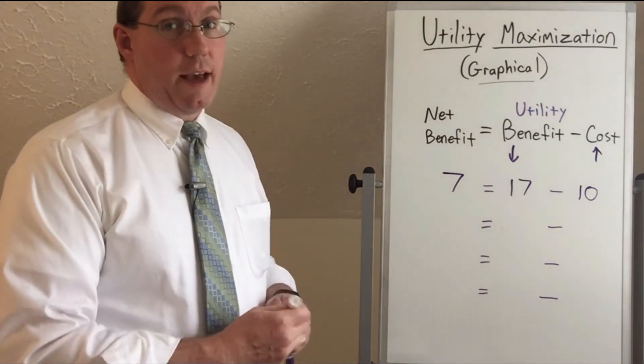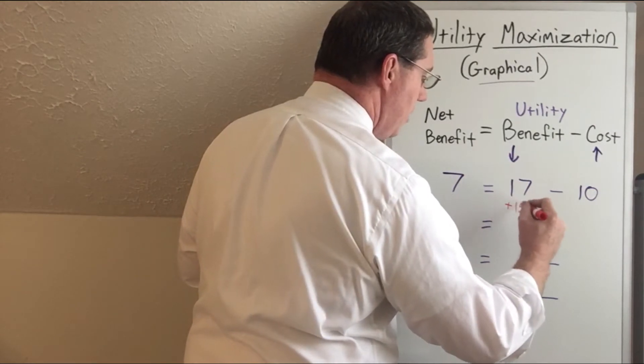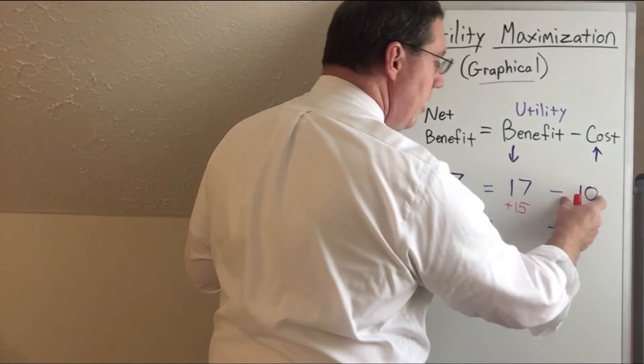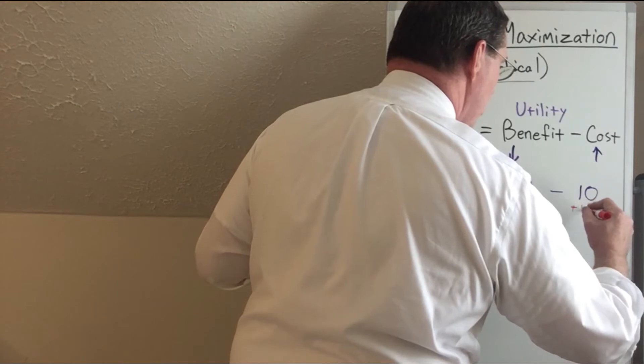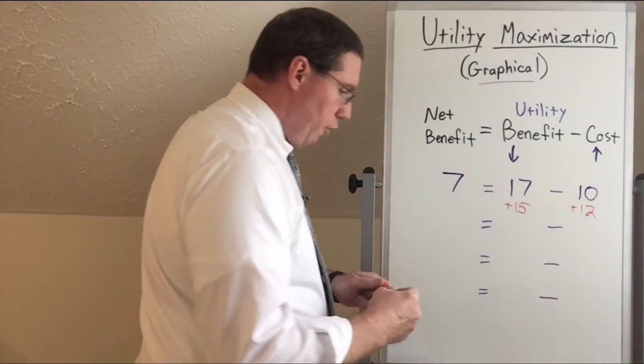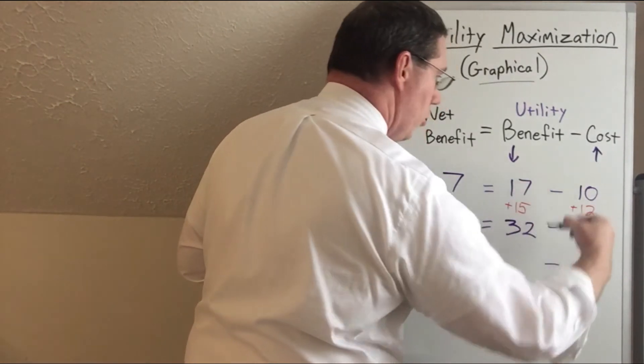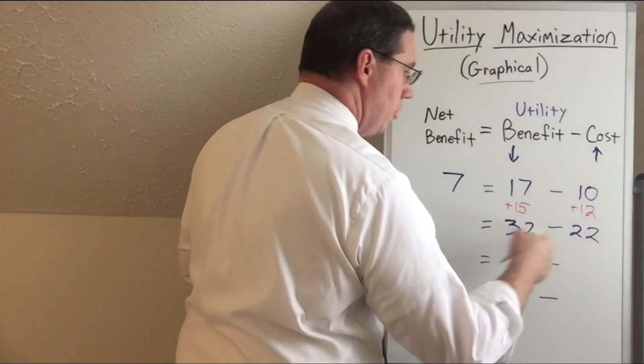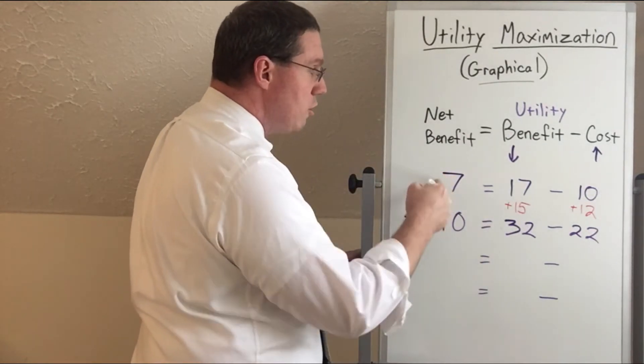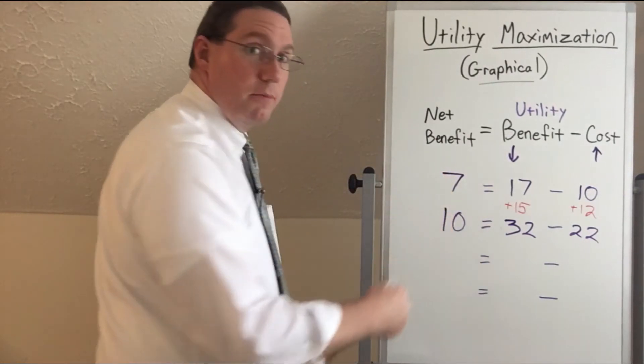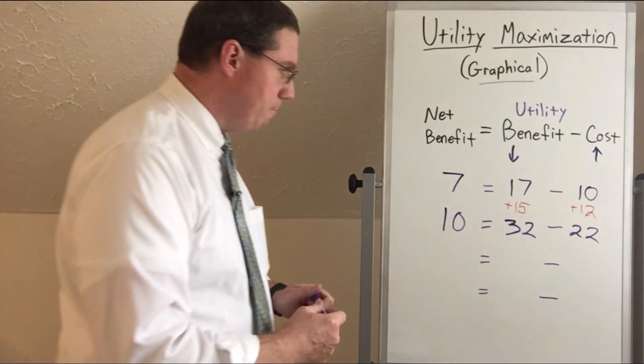Now let's say you're going to consume a second one, and the second one isn't going to give you 17, it's going to give you 15. So we're going to add 15 here, but the cost of the second one is a little bit higher than 10 because of the law of increasing opportunity costs. So let's say that it goes up by two and it's now at 12. So for consuming two, the overall benefit you'll get is 32 and the overall cost will be 22. 32 minus 22 is 10. Is that good? Yeah. Look, we have an increase in our overall benefit. We went from 7 up to 10. So is it worth consuming two of them? Sure, why not? We're going to get more benefit, more utility.